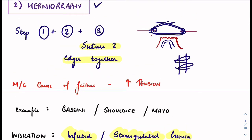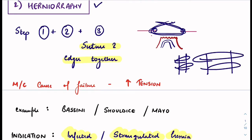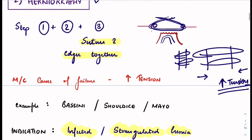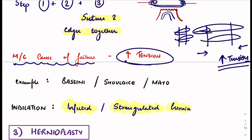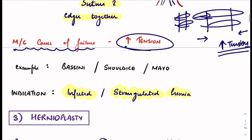When a defect is small and you suture it, it's fine. But when a defect is large and you suture it, you bring the two ends together, which increases tension. Increased tension means the sutures can slip through the sutured part — this is the most common cause of failure in herniorafi.